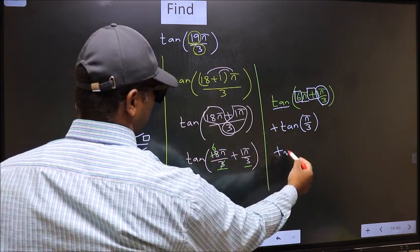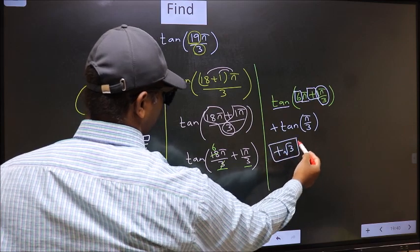So plus tan(π/3) is root 3. This is our answer.